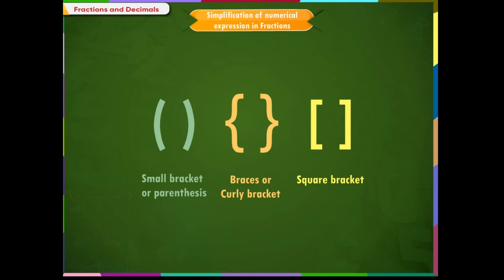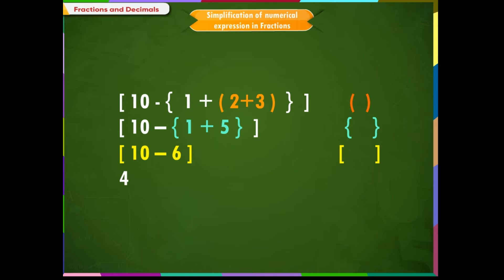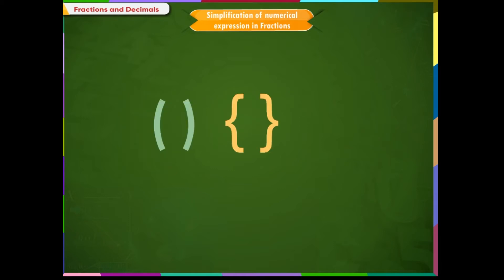If two or more types of brackets are involved in the problem, we solve the problem inside the small bracket first, then the curly bracket, and lastly the square bracket. So we have to remember that the order of solving the brackets is: small bracket, curly bracket, and lastly the square bracket. Let us learn them using examples.